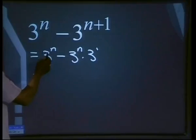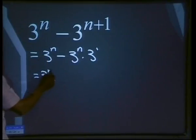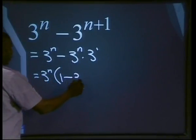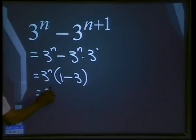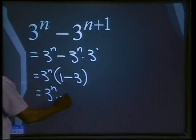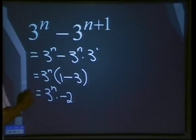Take out 3 to the power of n. We'll be left with 1 here, and there we'll be left with 3. So we have 1 minus 3. That will be equal to 3 to the power of n. 1 minus 3 will give us minus 2. So our answer will be 3 to the power of n times minus 2.